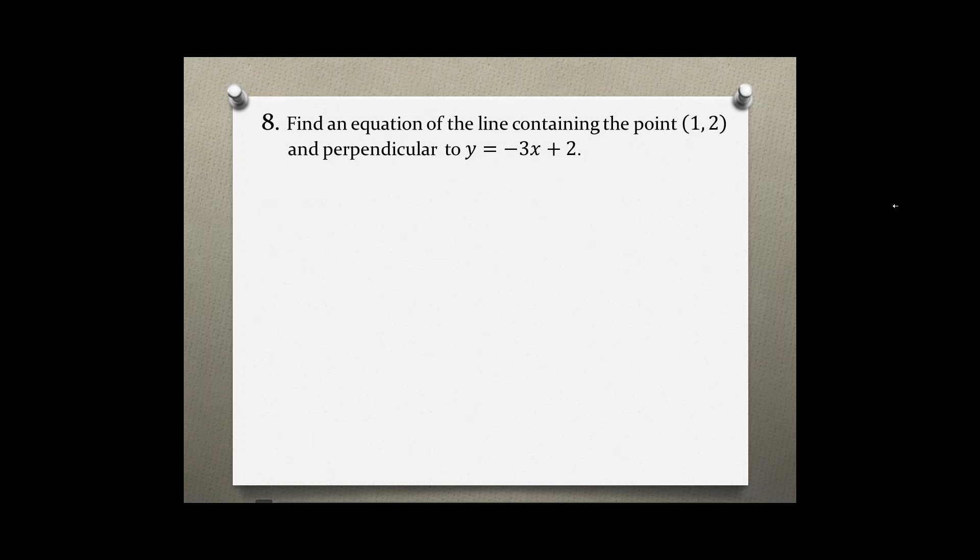Find an equation of the line containing the point (1, 2) and perpendicular to y = -3x + 2. This equation is already in slope-intercept form, which is y = mx + b.